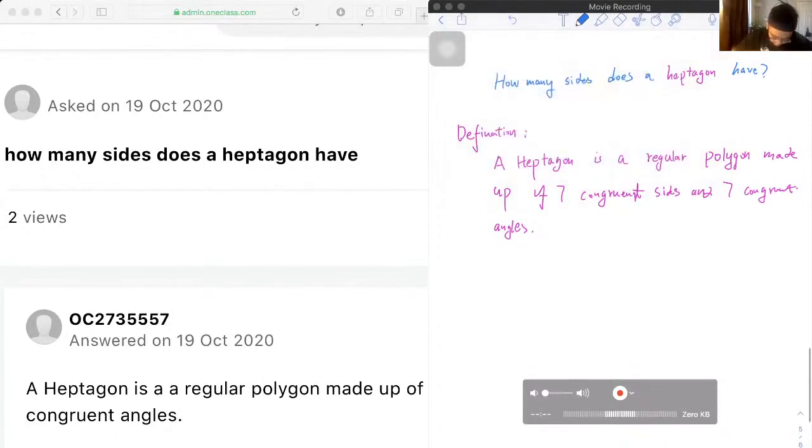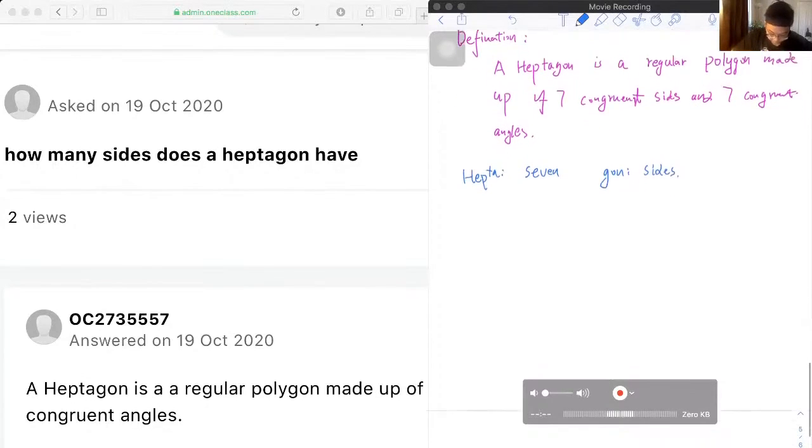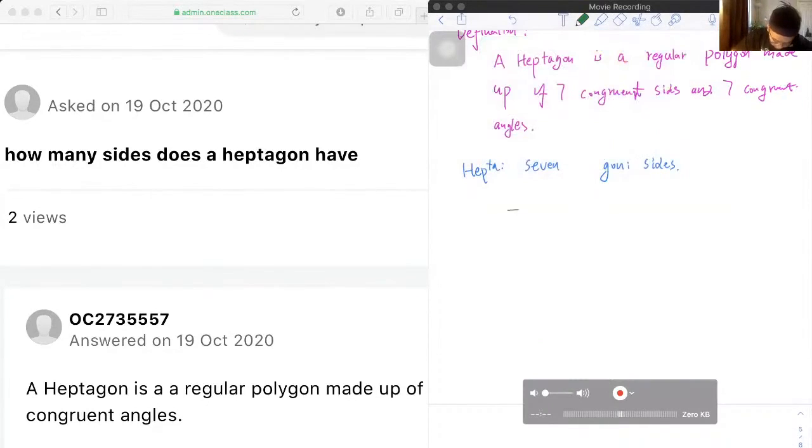The word hepta just means seven and gon means sides, so there are seven sides in a heptagon. Let's write the conclusion. Therefore,